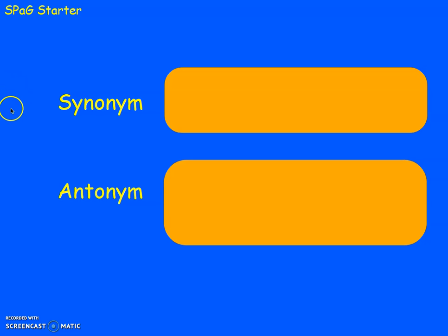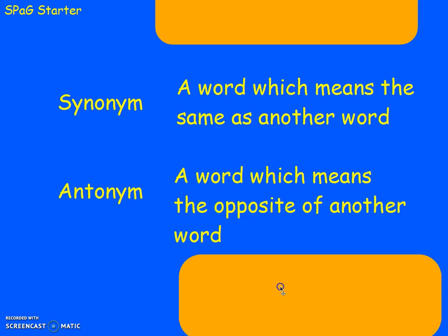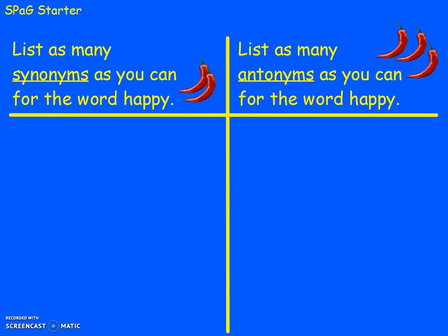The first thing we're going to look at are synonyms and antonyms. A synonym is a word which means the same as another word, like happy and glad. An antonym is a word which means the opposite of another word, like happy and sad. In your book, if you could draw something that looks like this using a ruler, can you list as many synonyms as you can for the word happy on one side and as many antonyms — opposites — for the word happy on the other side. Pause the video here, get on with that, and then we can move on.